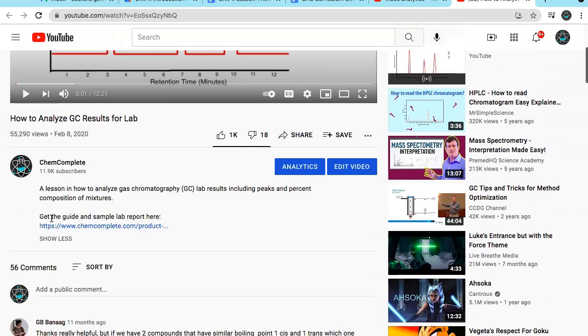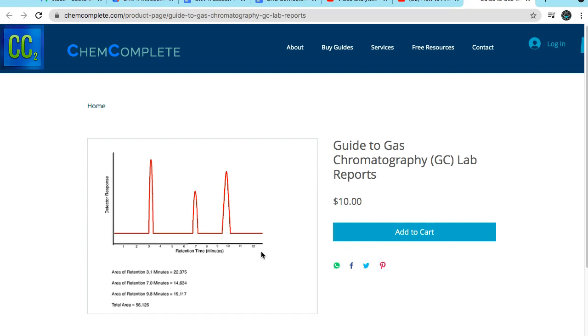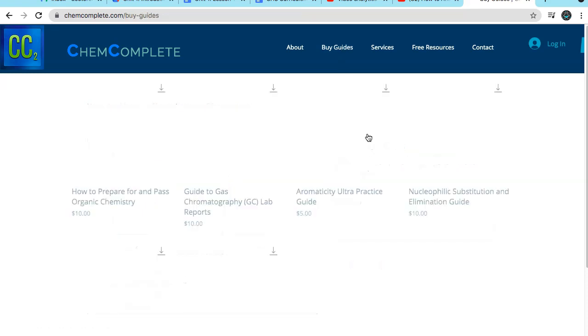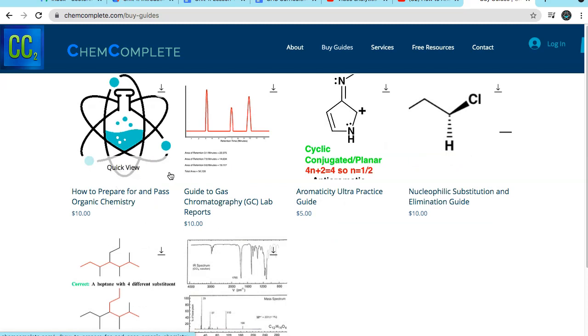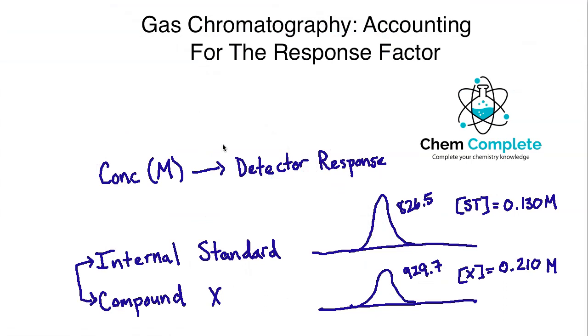And if you ever want to support the channel where it says get the guide in the sample lab report, if you go over to chemcomplete.com, we do have an entire report available for only $10. It basically summarizes everything I went over in this initial video, not the response factor video. And then it runs you through a mock lab report for something of this nature. So if you're ever struggling, you can head over there. There's plenty of other things that you can check out in terms of the guides that we have. We have some for spectroscopy. If you're talking about trying to solve unknowns with IR, NMR, how to pass organic chemistry. If you're struggling with aromaticity, I have a practice guide, nucleophilic substitution versus elimination guide. So your support is always appreciated. Just viewing the content on YouTube is appreciation enough. So remember to subscribe for the latest content. Leave that like if you haven't, and I'll see you guys next time. Take care.